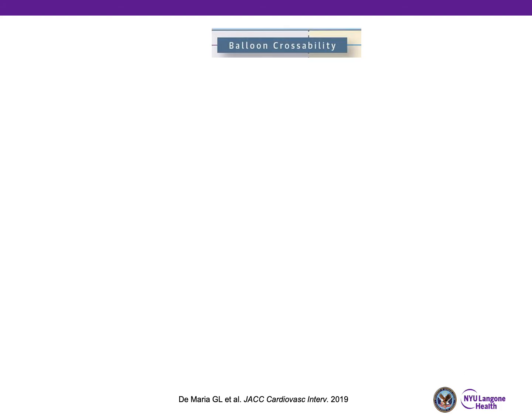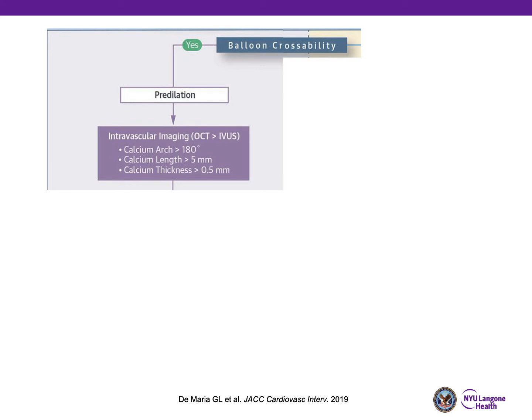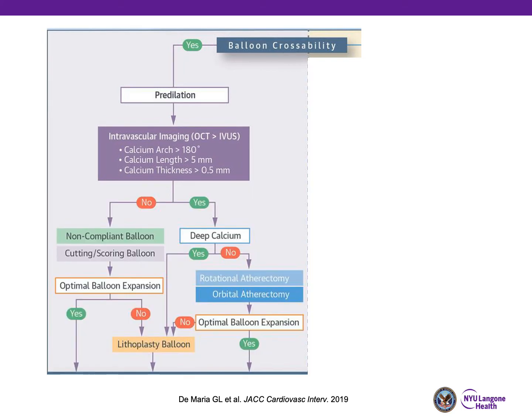Here is a potential algorithm. The first question is: is there balloon crossability of the lesion? If so, can you deliver an intravascular imaging device? If you cannot, you may require a small pre-dilation, but then you really should consider intravascular imaging to get a sense of the arc, length, and thickness.